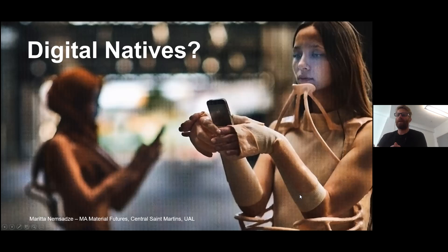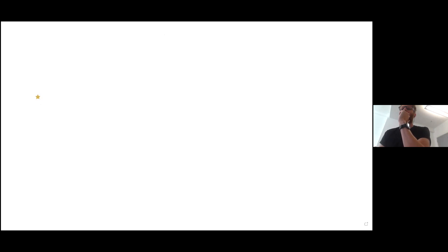Rather than just talking through it, I'm going to put a whiteboard up and I'd like everybody to answer for themselves: what does the term 'digital native' mean? I haven't used this whiteboard before, so this is exciting. There's a whiteboard — everybody can draw on it. You might want to use the text function or draw freehand. To annotate, click 'View Options' at the top of your screen and find 'Annotate'.